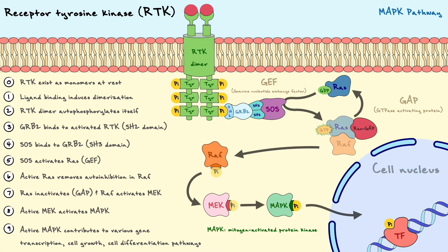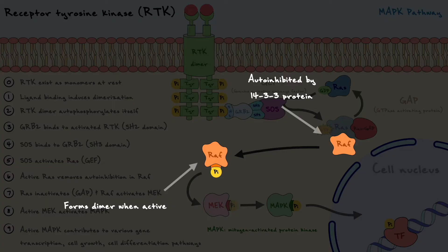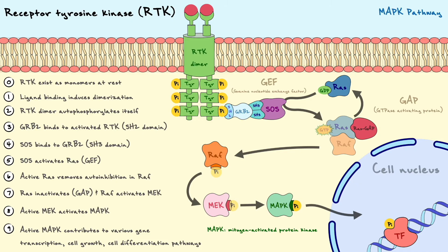Once RAF has dissociated from RAS and is active, it phosphorylates another kinase named MEK. MEK then links our pathway to MAPK by phosphorylating it and thus activating MAPK. MAPK then phosphorylates and contributes to many downstream signals involved in cell growth, differentiation, proliferation, and so on, with their actions often ending on transcription factors. A few additional details worth noting: RAS is generally membrane bound; the auto-inhibition in RAF is carried out by a small molecule named 14-3-3, and binding to RAS causes de-phosphorylation of 14-3-3 and partial activation of RAF; and when RAF is activated, it forms a dimer. These are finer details, but the most important points from the MAPK pathway are as shown.